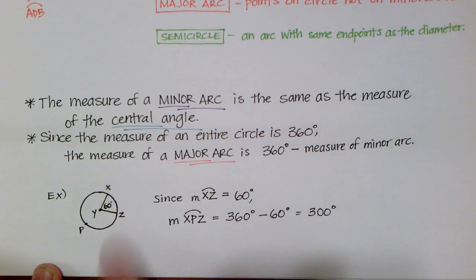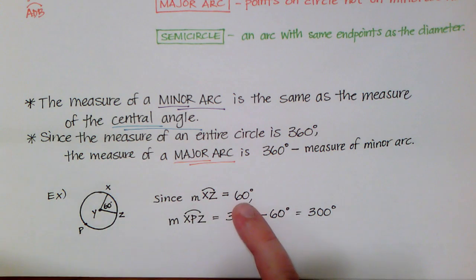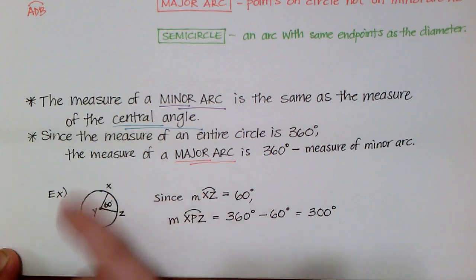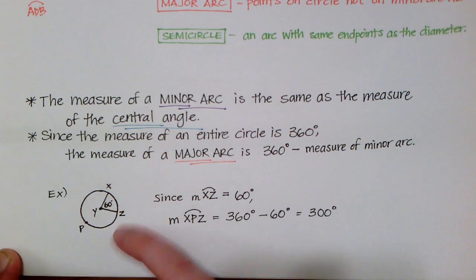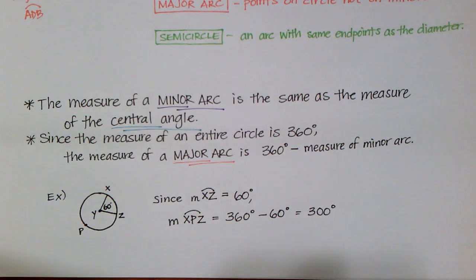So, I have a little example down here. If you're looking, my central angle XYZ measures 60 degrees. So, that means that the minor arc, the measure of that, is also 60 degrees, which is what I wrote. So, if I want to find the major arc right here, XPZ, the measure of that, I simply have 360 degrees, subtract the minor arc, and I find, oh, the rest of it is 300 degrees. So, that's awesome. So, let's move on. My lesson's pretty short today.